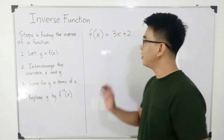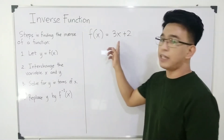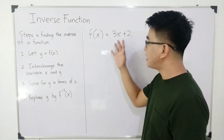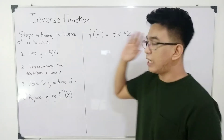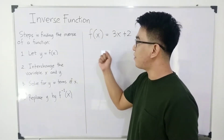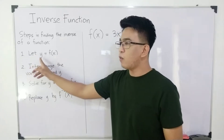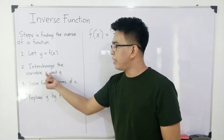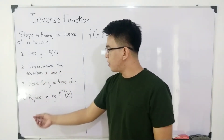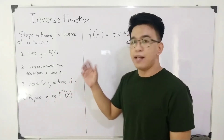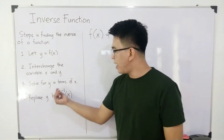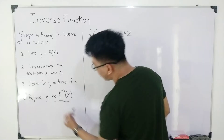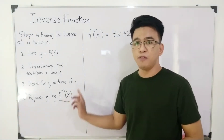So let's say, for example, I have here the function f of x is equal to 3x plus 2. The question here, how are we going to find the inverse of this given linear function? And here are the steps on how to find its inverse. First, let y be equal to f of x. Second, interchange the variable x and y. Third, solve for y in terms of x. And lastly, we have to replace y by f inverse of x. By the way, this is our notation for the inverse function — f inverse of x.